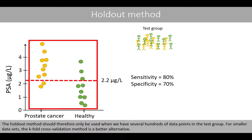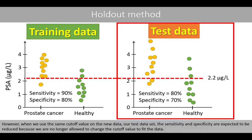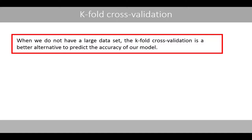Note that the test dataset includes only 20 data points, which results in large uncertainty — a single data point on the other side of the cut-off line will cause a 10% difference in specificity or sensitivity. The holdout method should therefore only be used when we have several hundreds of data points in the test group. For smaller datasets, the K-fold cross-validation method is a better alternative. Note that if we calculated sensitivity and specificity on the training data, we got 90% sensitivity and 80% specificity because we selected a cut-off of 2.2 that maximizes these metrics. However, when we use the same cut-off on the test data, sensitivity and specificity are expected to be reduced because we can no longer change the cut-off to fit the data.